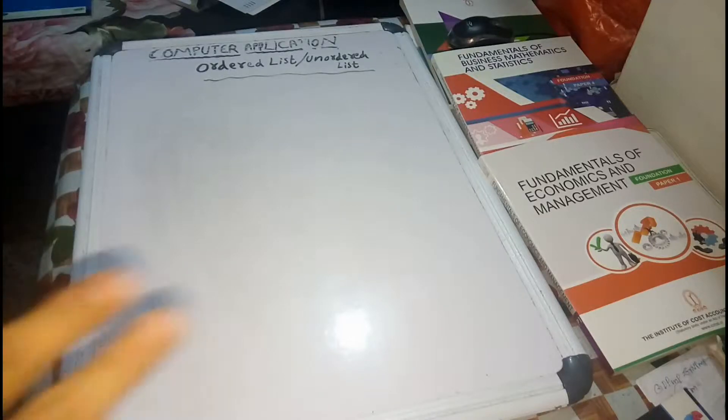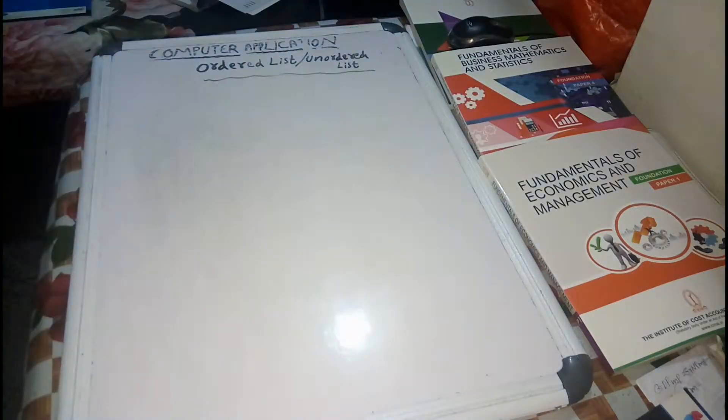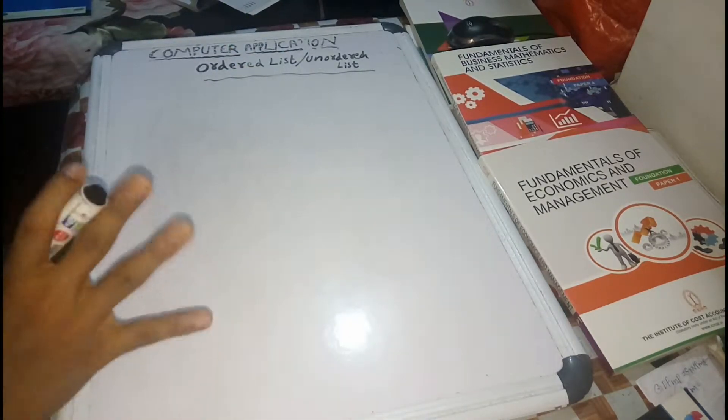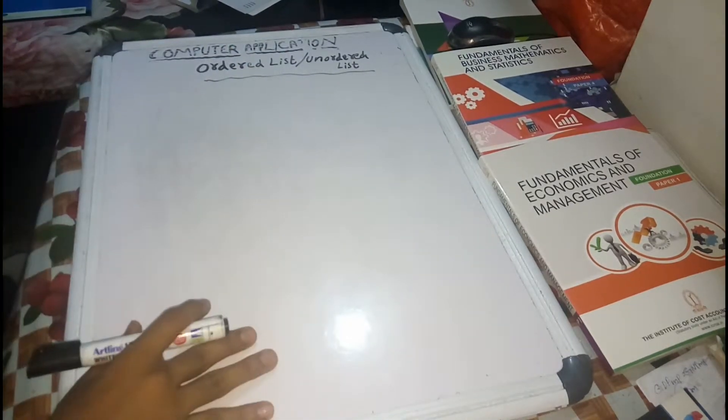Okay friends, now I'm going to talk about this plastic computer. What's the question? Ordered list and unordered list. How do we do this? It's a simple thing about HTML — ordered list and unordered list.